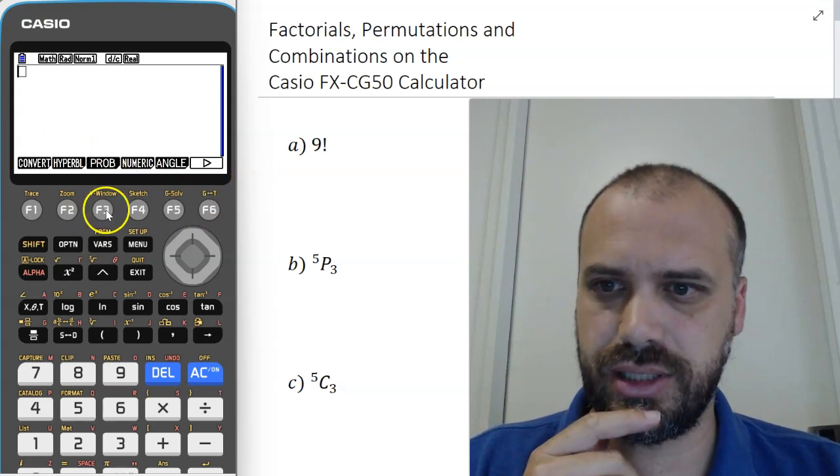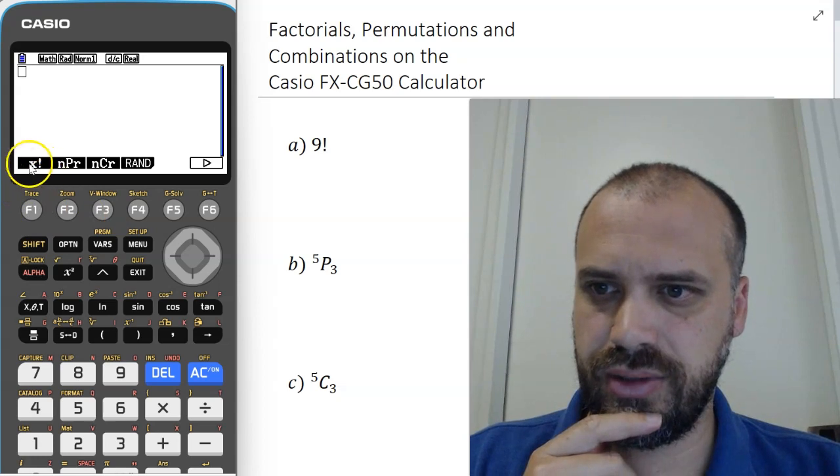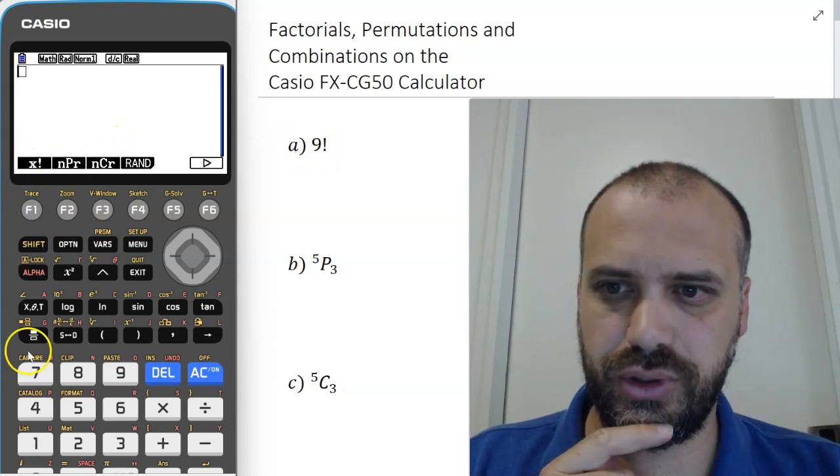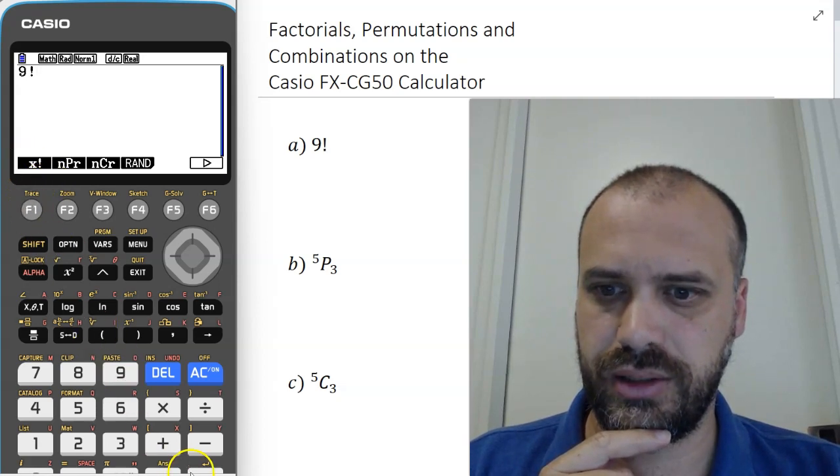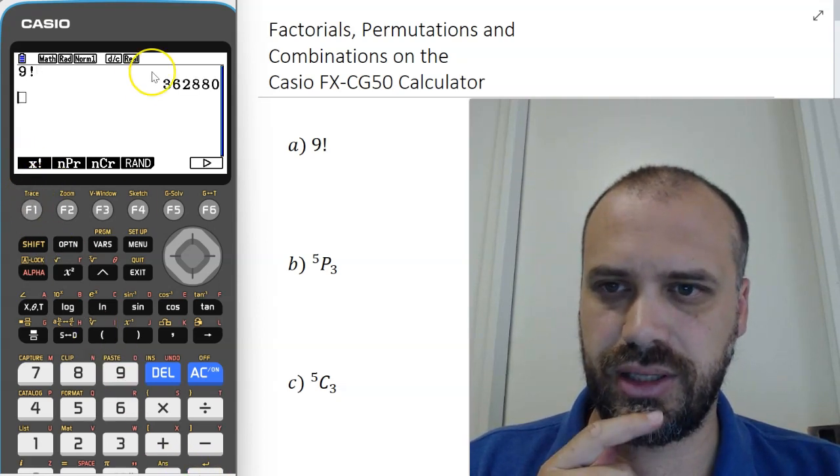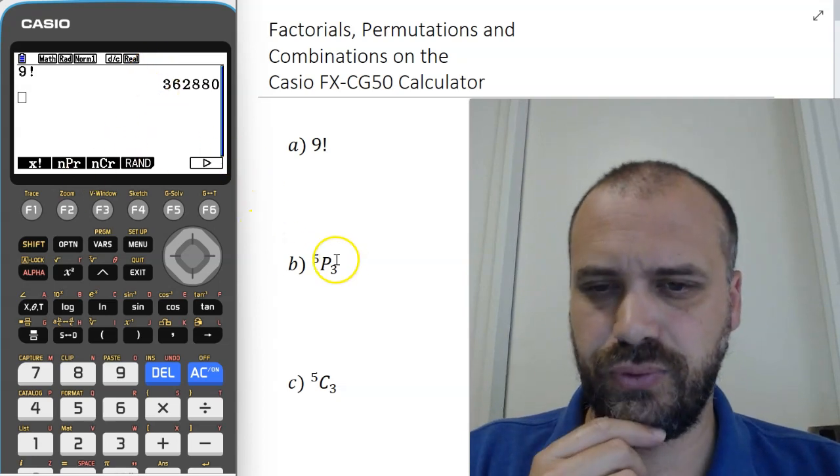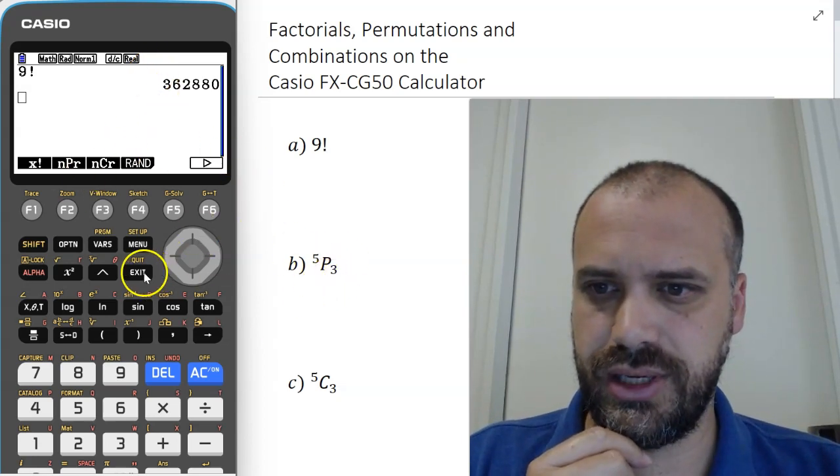probability here, F3, and then these are our three options. So if we want 9 factorial, it's 9 and then F1 for factorial, execute, and there's our first answer. If we want 5P3, I'm just going